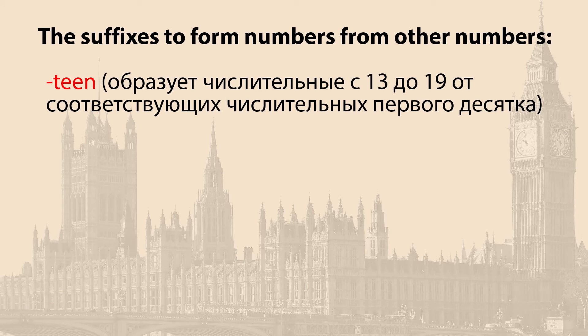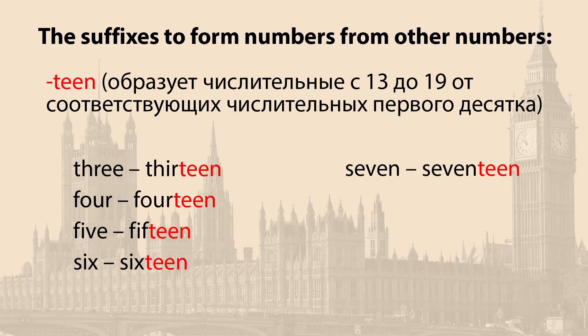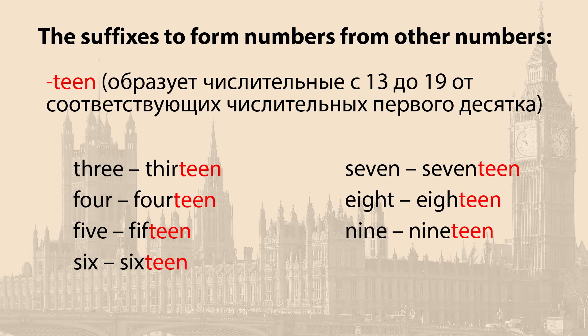Well, that was easy. The next suffix to form the numbers from 13 to 19 is -teen. The suffix -teen forms numbers from 13 to 19 from the corresponding single-digit numbers. For example: 3 → 13, 4 → 14, 5 → 15, 6 → 16, 7 → 17, 8 → 18, 9 → 19.